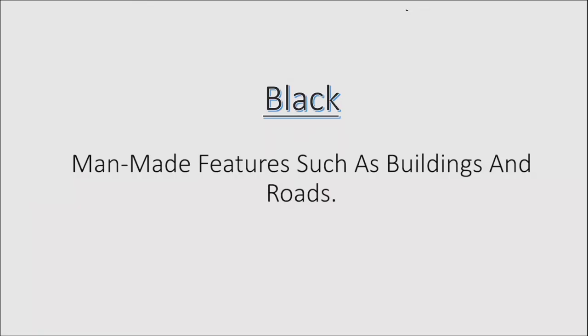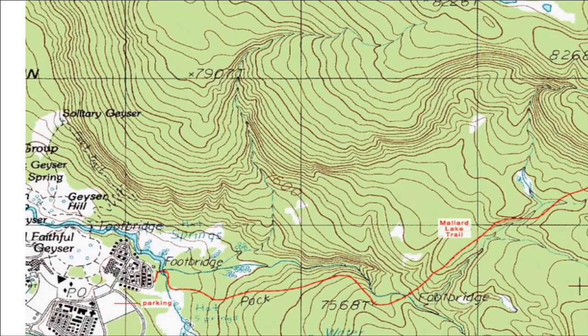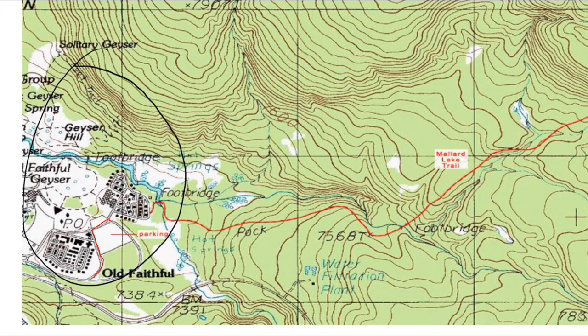The first color we're going to talk about is black. Black represents man-made features such as buildings and roads. On this particular topo map, in the lower left-hand corner, we see this area here in black — these constitute buildings and the smaller roads in this area are also in black.